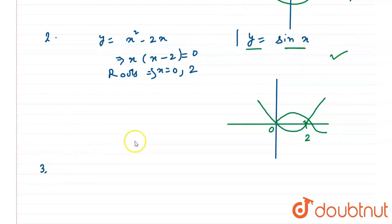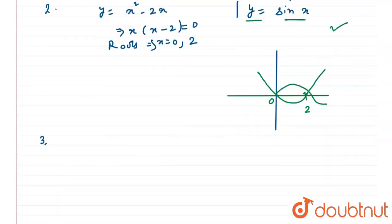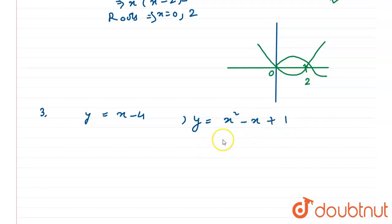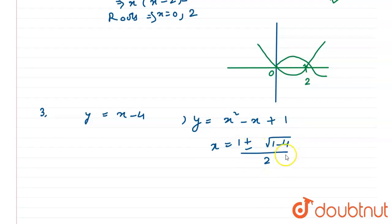Let's solve the third part. Here we have y = x - 4 and y = x² - x + 1. Setting them equal gives a quadratic equation. Applying the formula: x = (1 ± √(1 - 4)) / 2. We can see this gives a negative value under the root, so the discriminant d is less than 0, meaning there are no real roots.